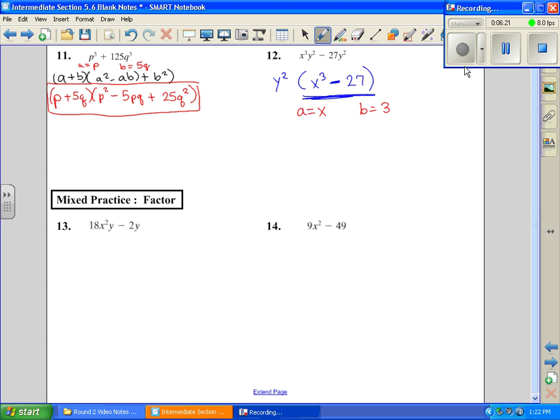My formula for difference cubes is going to be A minus B, A squared plus AB plus B squared. I'm going to substitute my values in. X minus 3. X squared plus 3X plus, now B squared, that's 3 times 3, which is 9. And do not forget to drop our original GCF that we pulled out. And we're done.